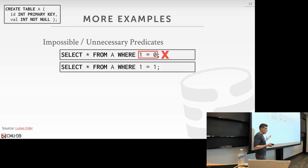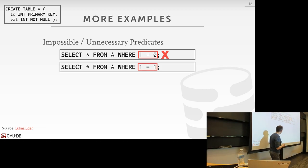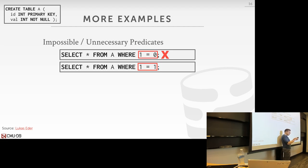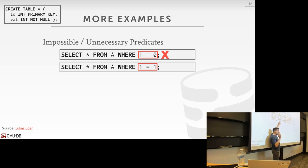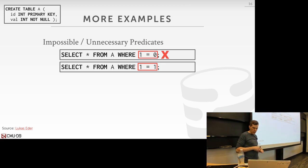Likewise, you can have the opposite — where everything will match, like '1 equals 1.' In that case, every tuple is going to match, but I don't want to actually apply this predicate and check each one. If I have a billion tuples, I don't want to go through every single one asking 'does 1 equal 1?' Instead, I can say I don't need this predicate at all, just do a sequential scan straight dump of the table without applying any predicate — essentially rewriting it to 'select star from A.'